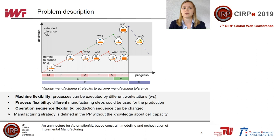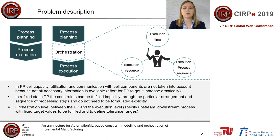We can change the order of the process steps, as shown by the red and green marked manufacturing strategies. Today, we have to decide during process planning which kind of manufacturing strategy to use, based only on the process point of view, without taking into account the cell capacity.